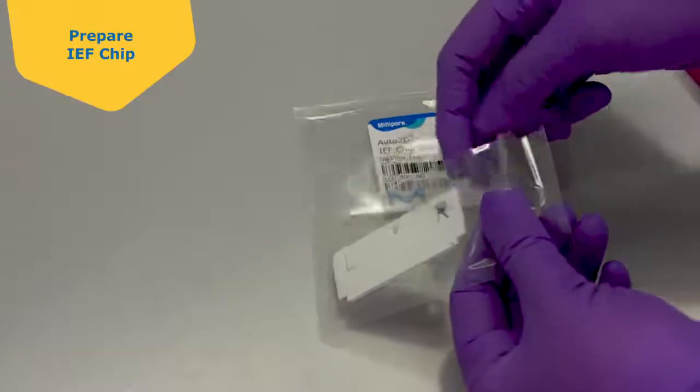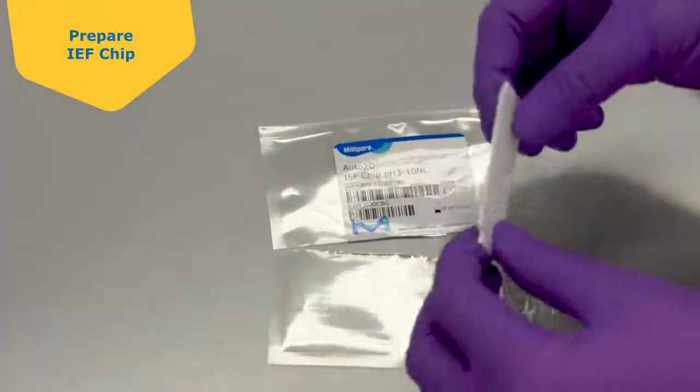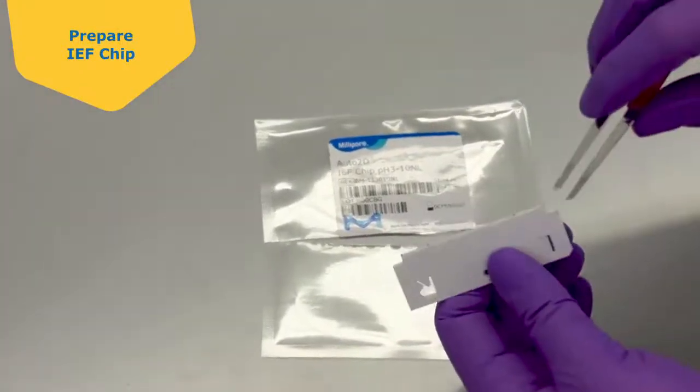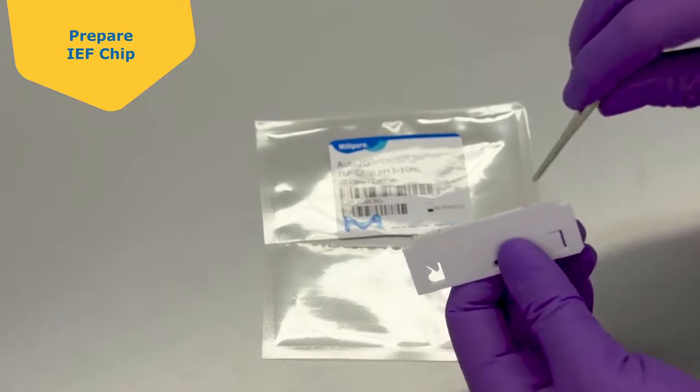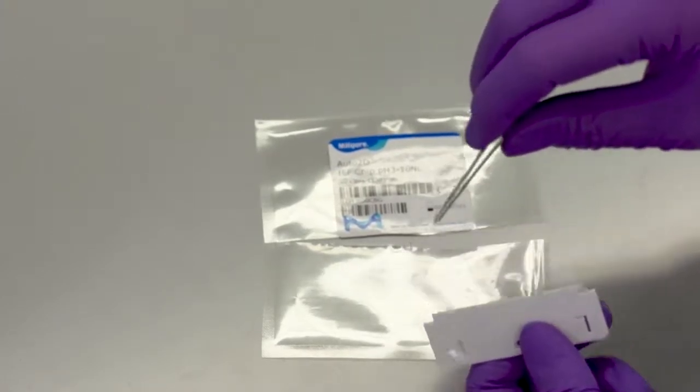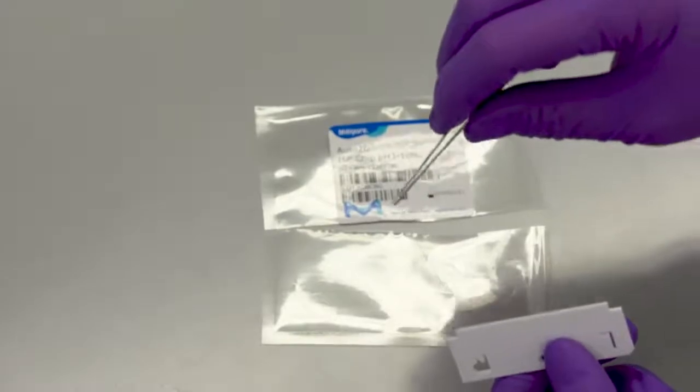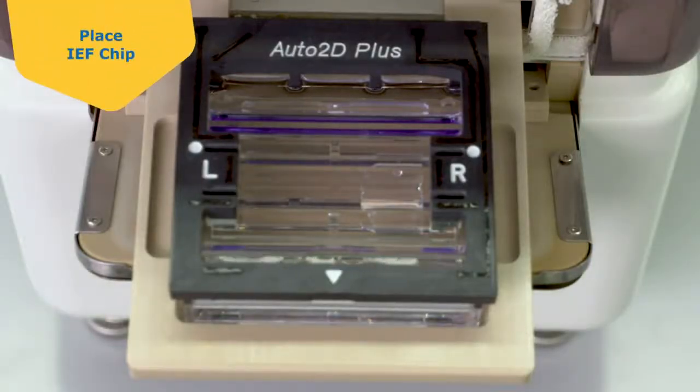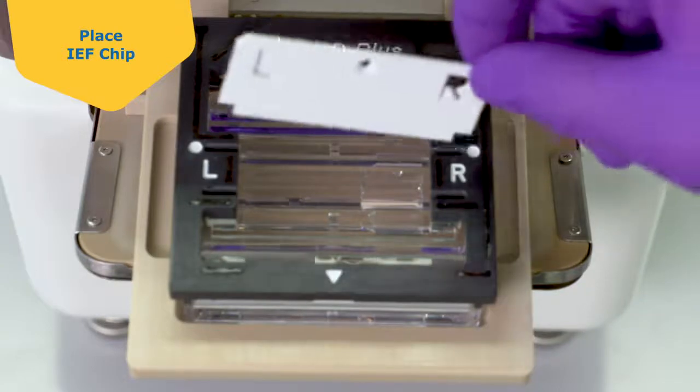Next, take out the IEF chip and carefully remove the protective film on the bottom of the chip. The IEF chip should be at room temperature before adding it to the chip assembly.